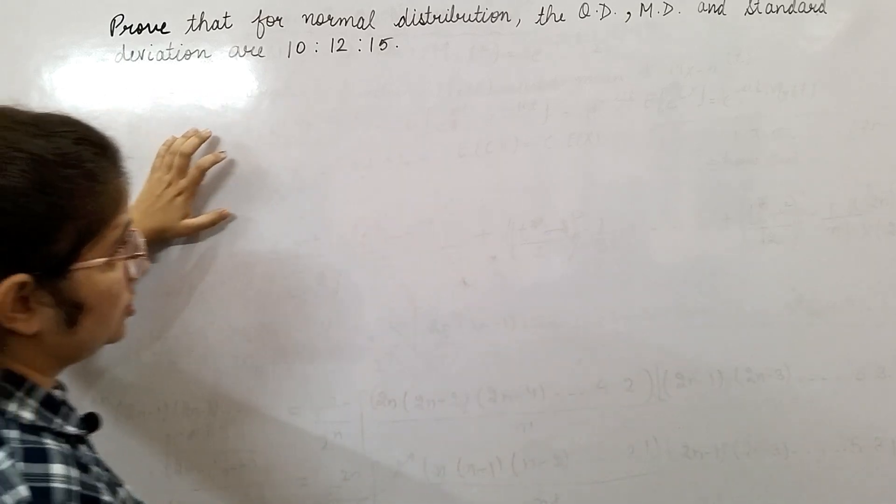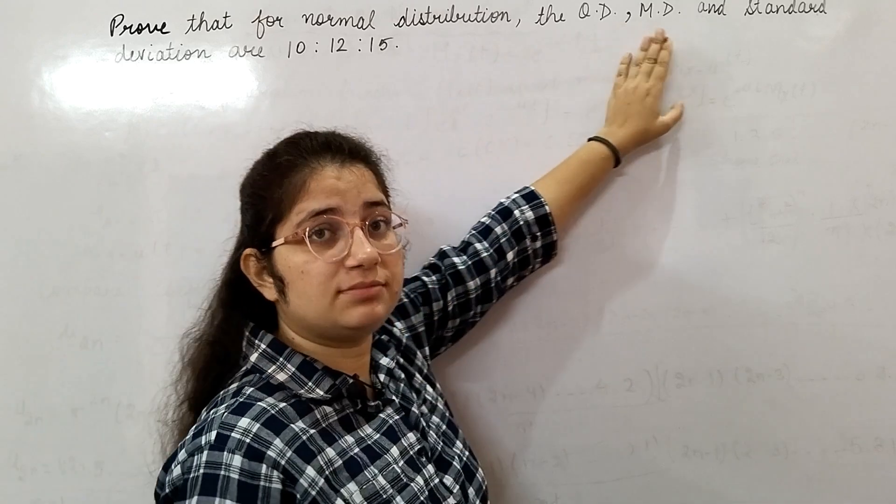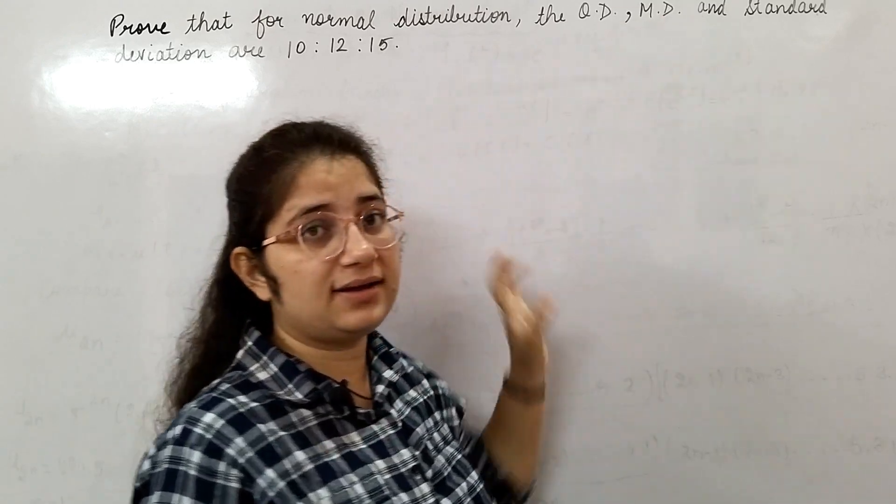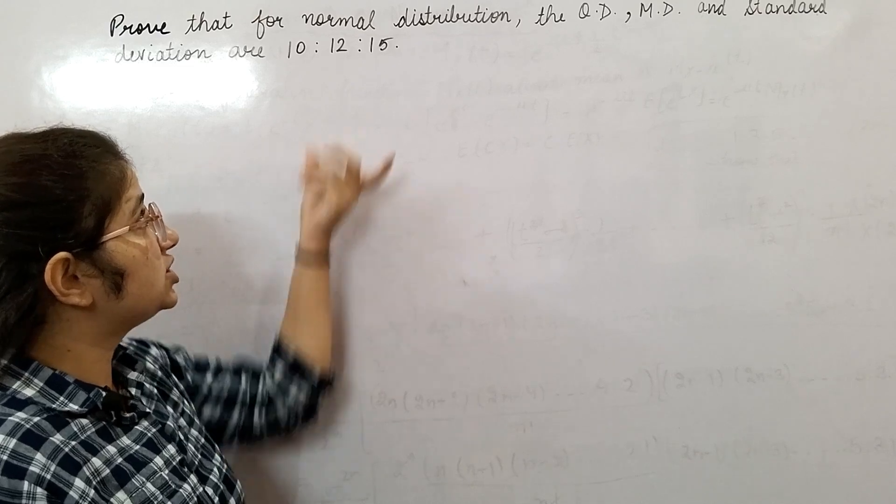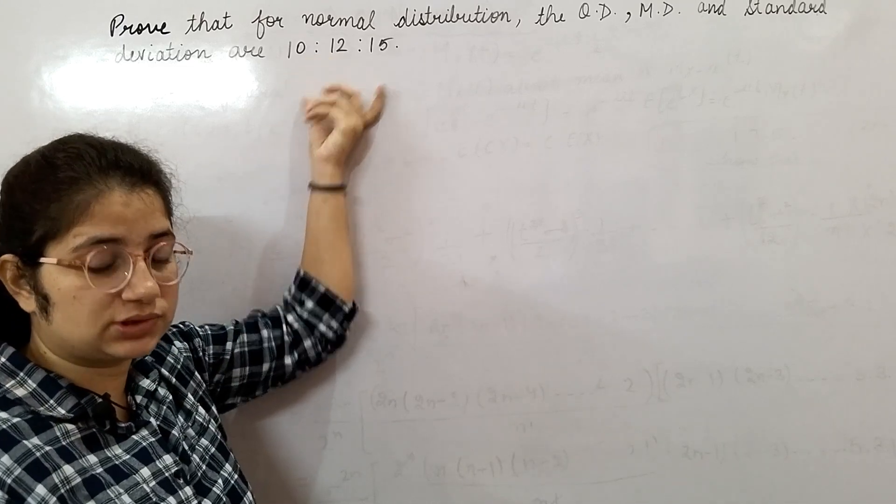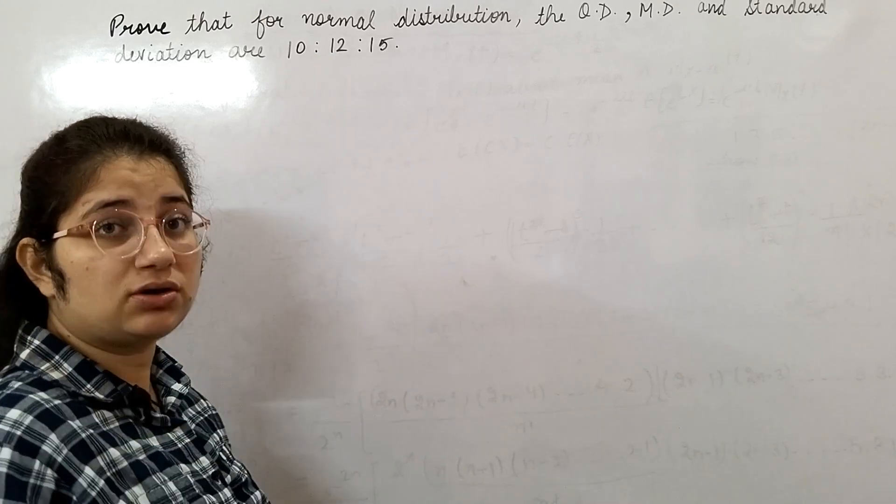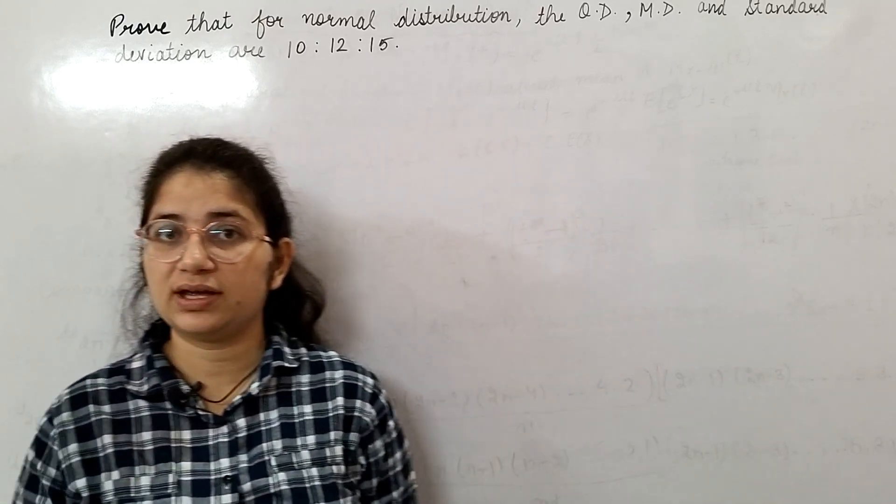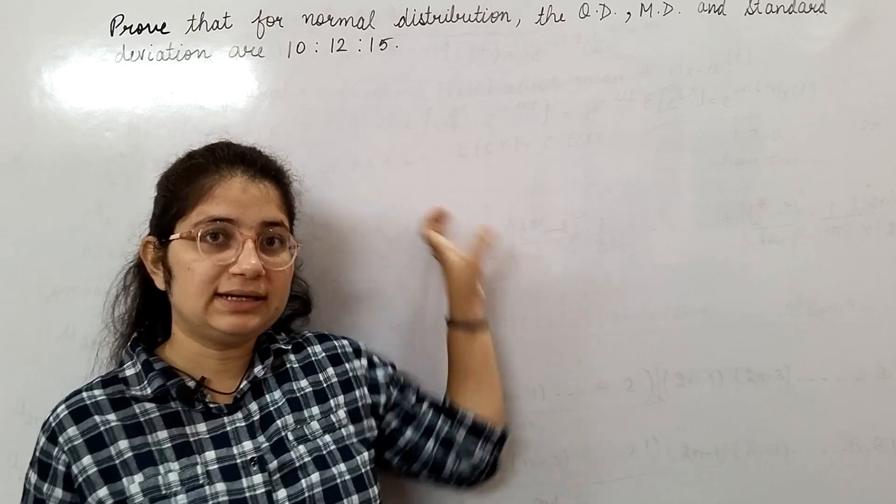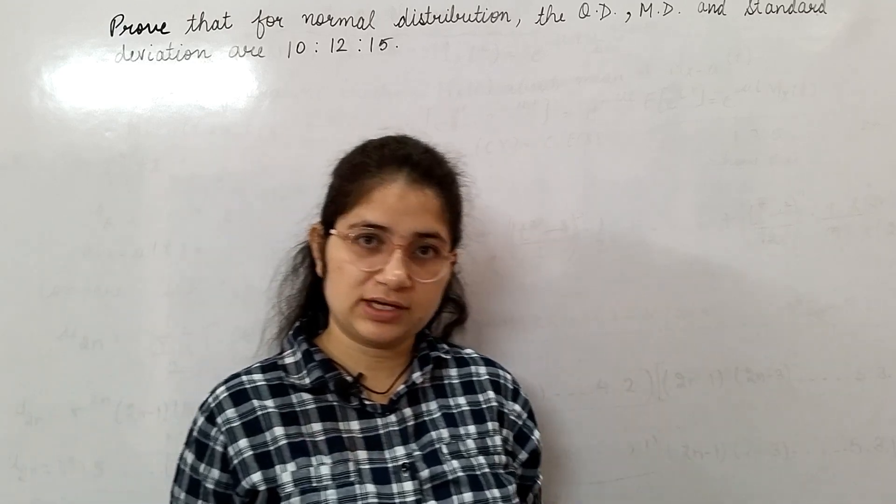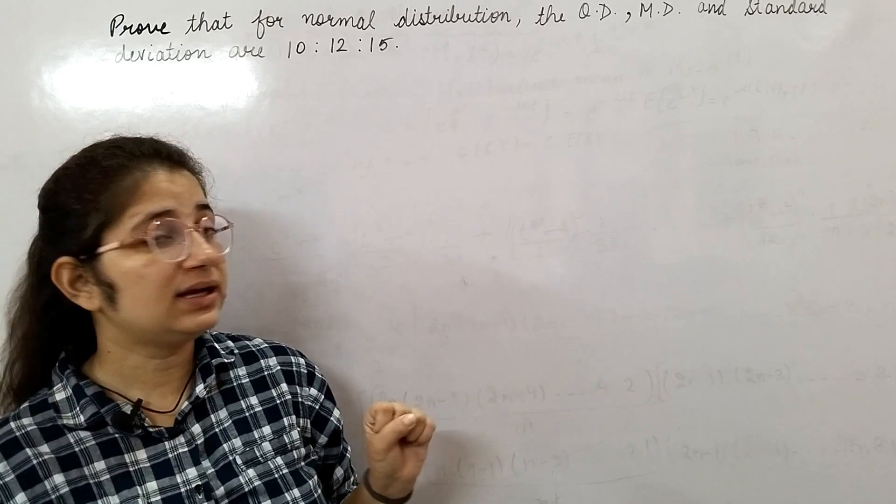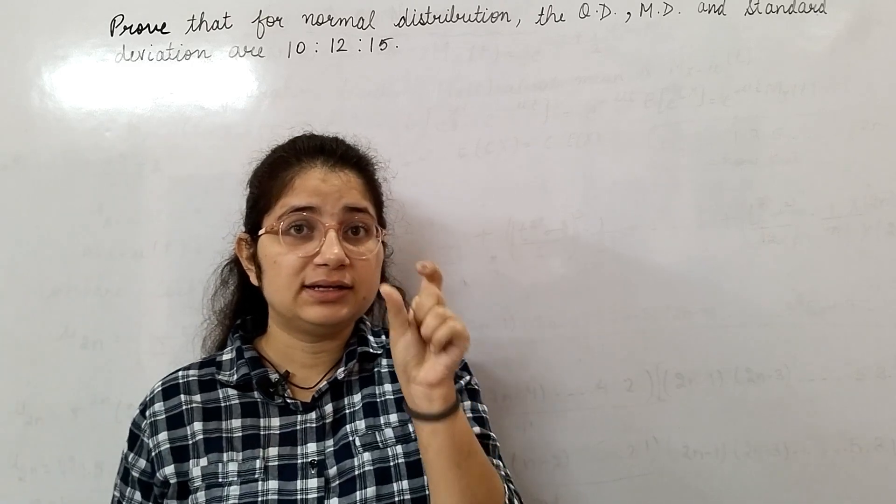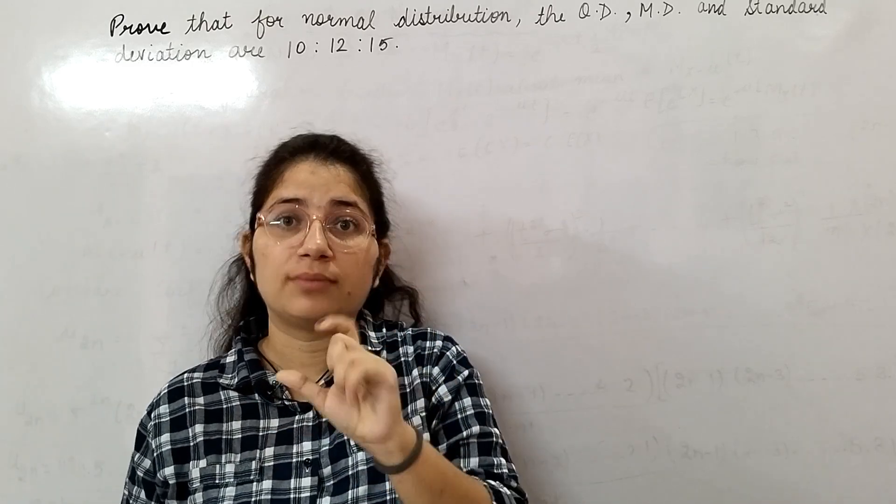So in normal distribution, quartile deviation, mean deviation, and standard deviation—the ratio of these three you have to show. Standard deviation shows the variability in your data. Mean deviation shows the difference of your data from the mean value.